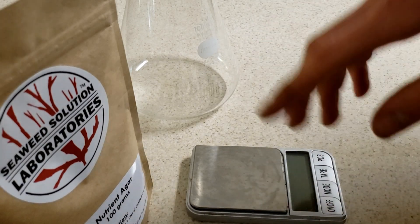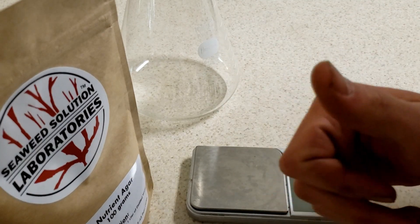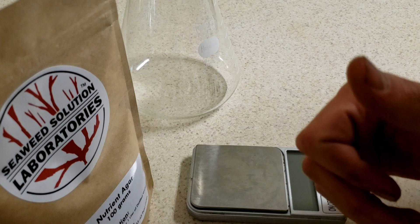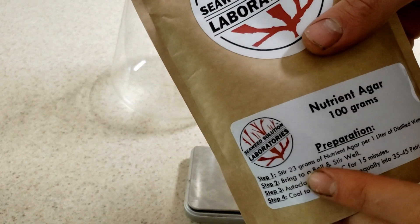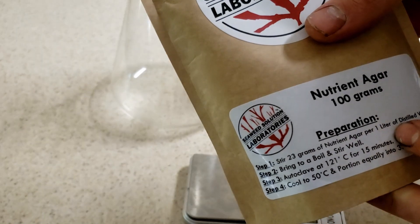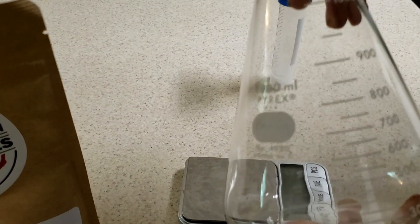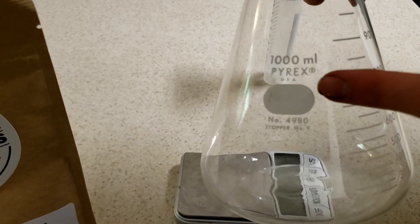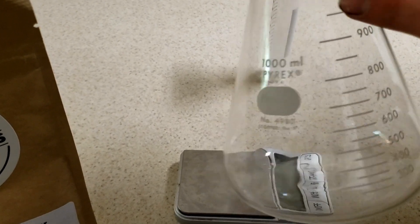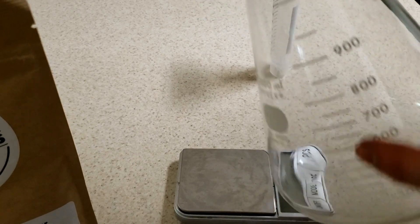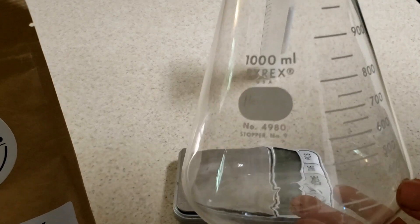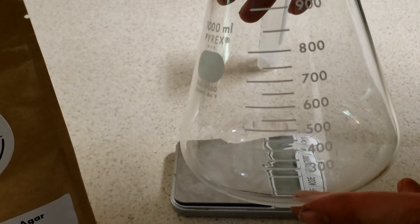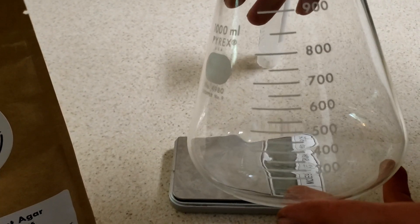This is really similar to my liquid culture video which I'll put a link or a little card up in the corner here. Okay, so let's get started. This bag says 23 grams of agar for one liter of distilled water. We're going to cut that in half. Even though we have a one liter container here, we don't want to fill it up all the way because again, this is going to be boiling in the microwave.